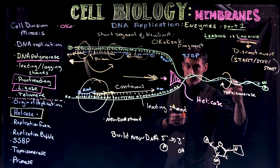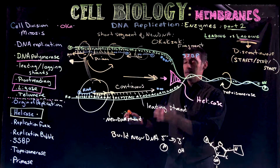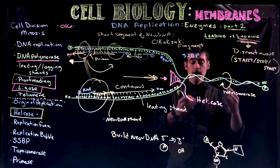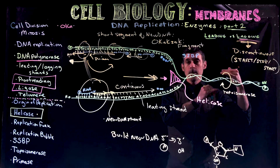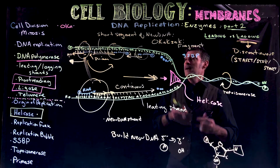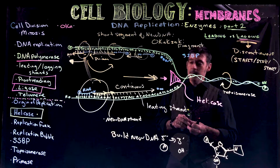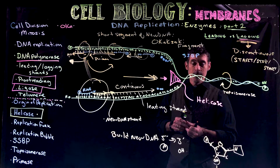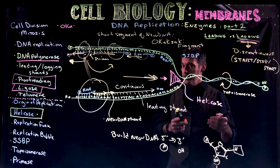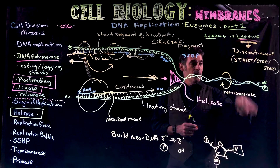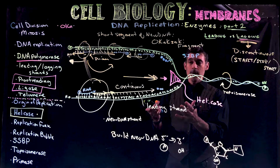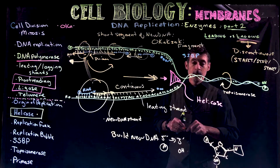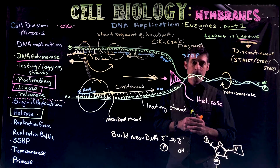This is why learning the structure is so important to get the details of this process. It makes a lot less sense if you don't really know the structure, if you're not familiar with individual nucleotides, the double-stranded DNA structure. It makes learning some of this pretty much impossible to understand. You really have to get that part first — go back and review previous lectures that cover structure.